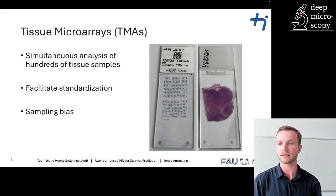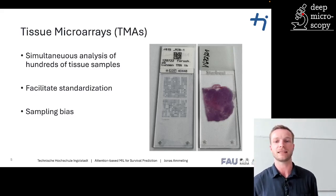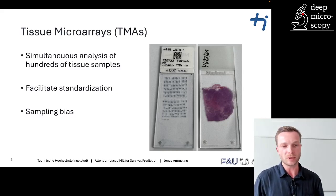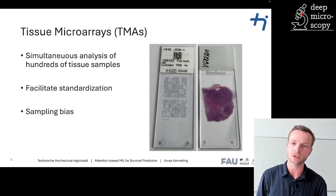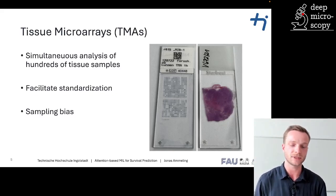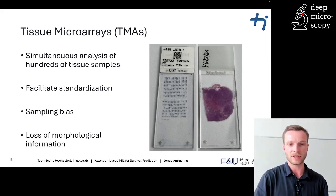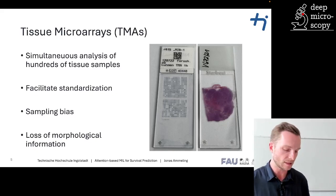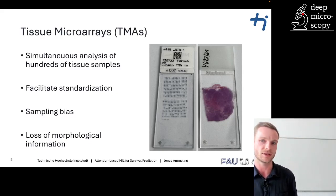However, there are also some disadvantages. Tissue microarrays rely on small tissue cores taken from the original tissue sample, and the sampling technique may introduce potential biases and limits the representation of the heterogeneity of the original sample, so that some important information and architectural context of the sample might be lost. Also, when taking multiple cuts from the same tissue microarray block, there can be some additional loss of information, as we will see in the next example.